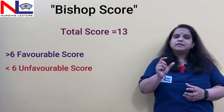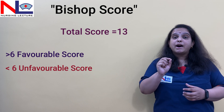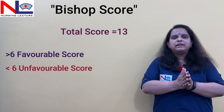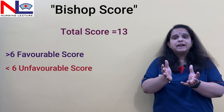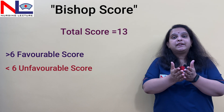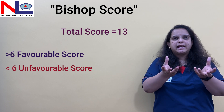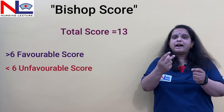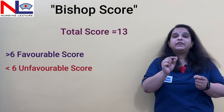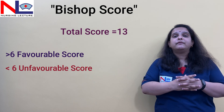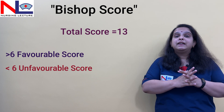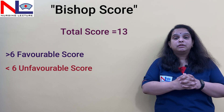Fetal fibronectin is also a good indicator and marker for successful induction of labour. It is a glycoprotein present between the amniotic sac and the decidual lining. If cervical dilatation or membrane separation occurs, fibronectin enters the vaginal vault and can be detected by a vaginal swab. If the value is more than 50 nanograms per milliliter, it indicates that induction of labour is likely to be successful.